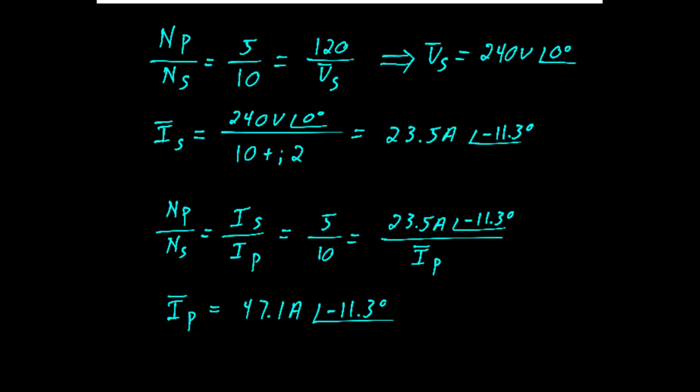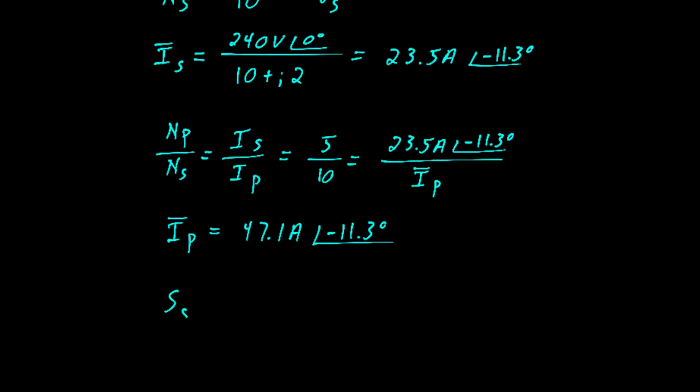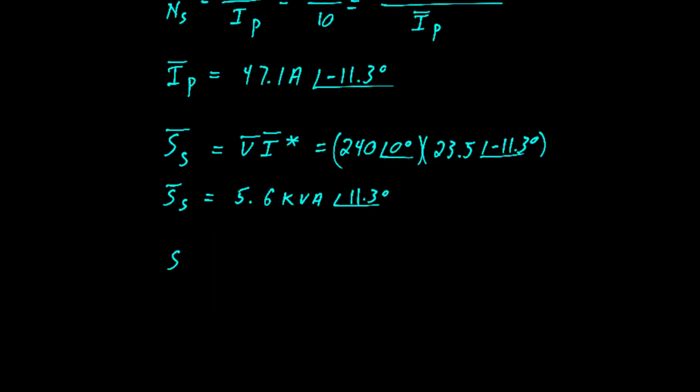Next, we calculate the power. We can do it on the secondary side if we'd like, where we say that complex power is the voltage times the complex conjugate of the current. Forgive me, that should have been 11 degrees, not negative 11. Yielding a complex power in the secondary of 5.6 kVA at an angle of 11.3 degrees. We know the complex power in the primary is the same as the complex power in the secondary.